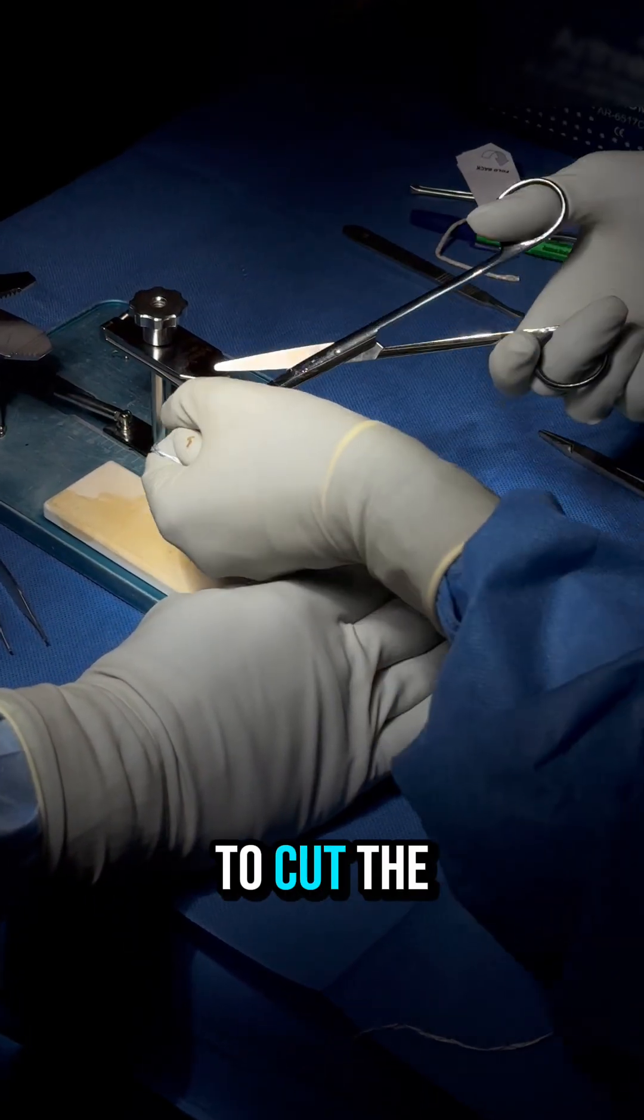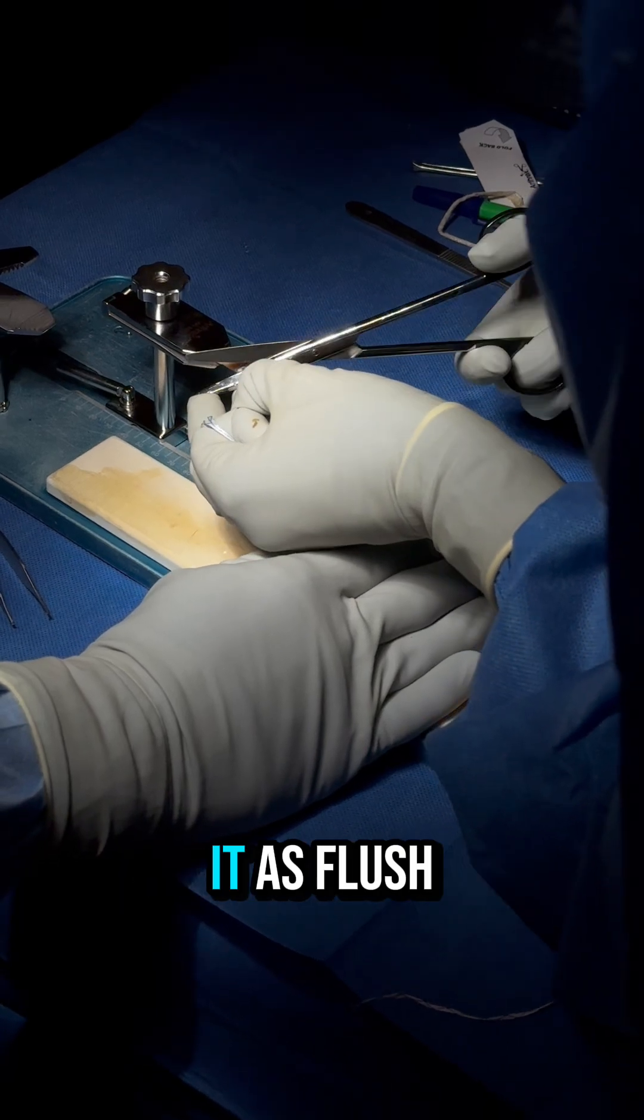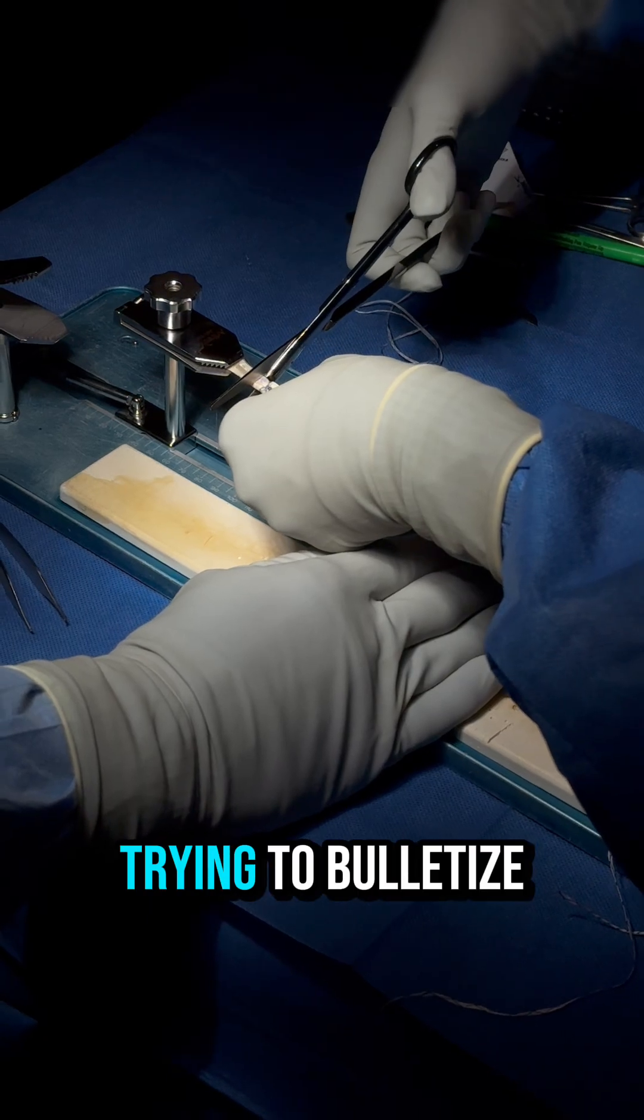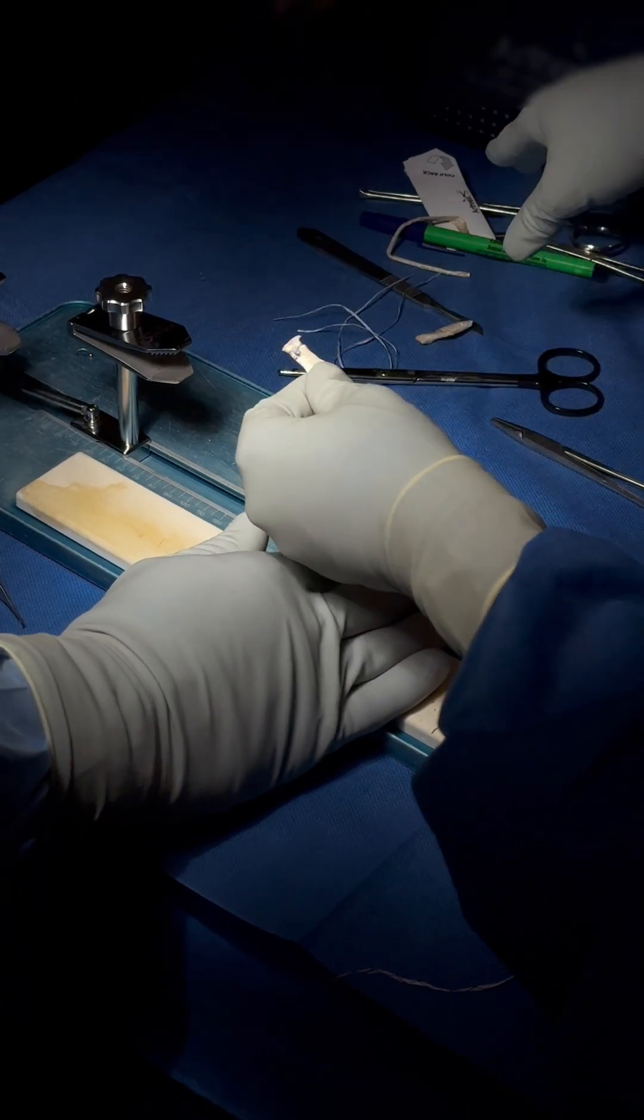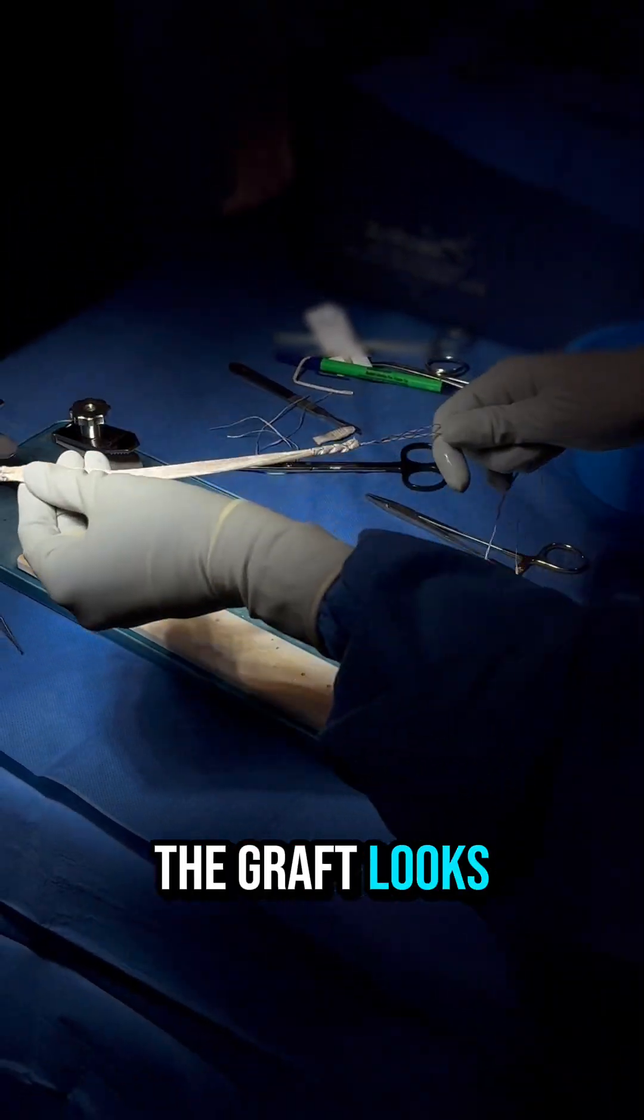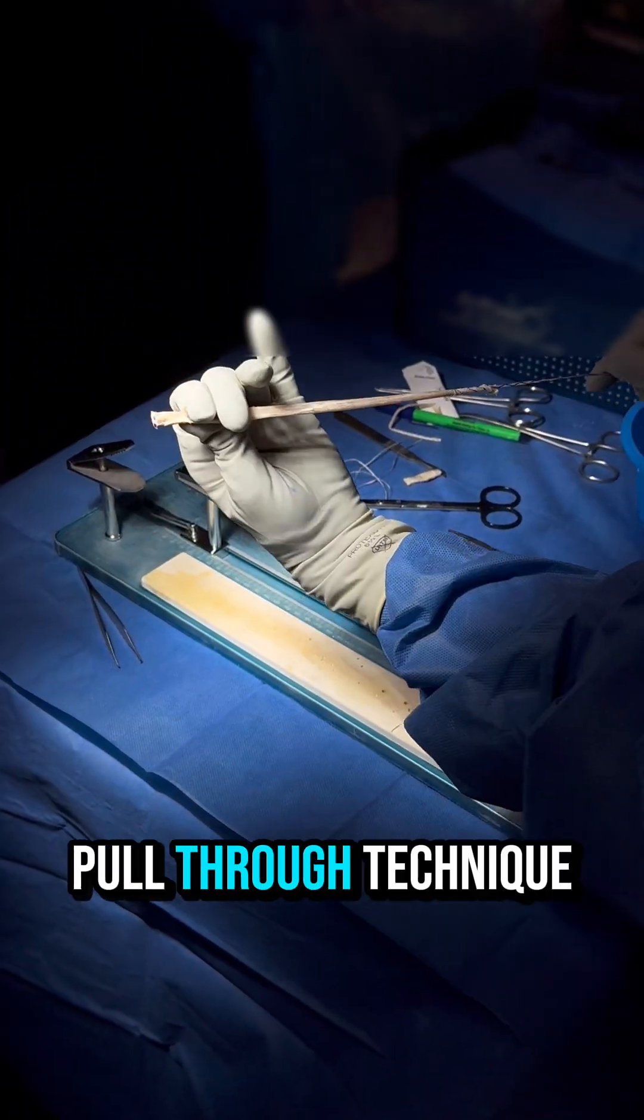Next, we cut the suture ends and make them as flush as possible. Then lastly, we amputate the graft, trying to bulletize it for easy incorporation. In the end, this is what the graft looks like and it's ready for our knotless pull-through technique.